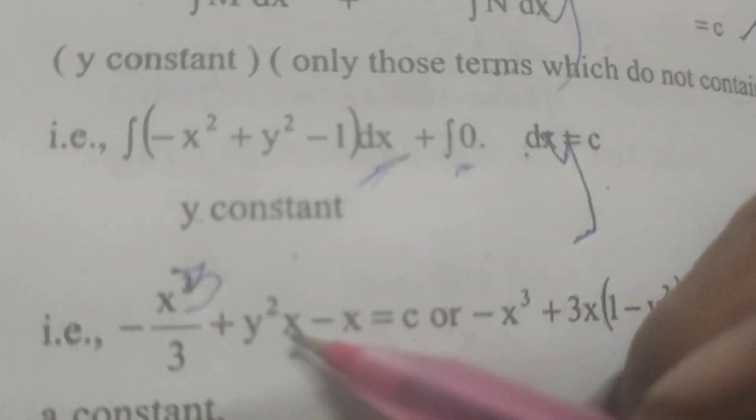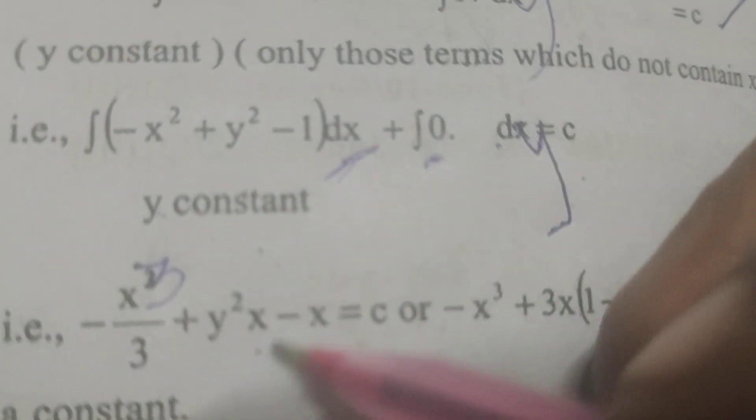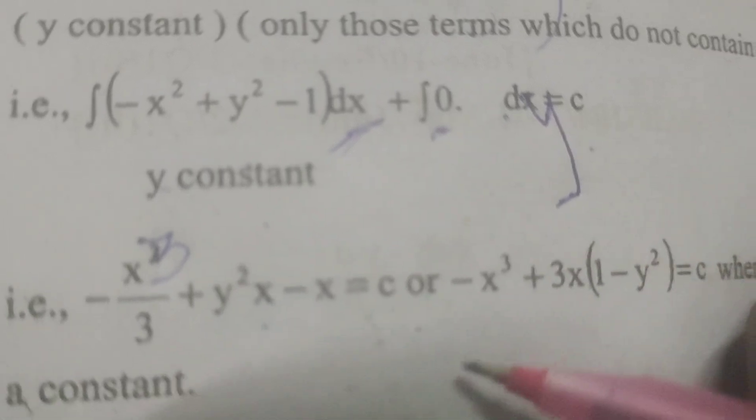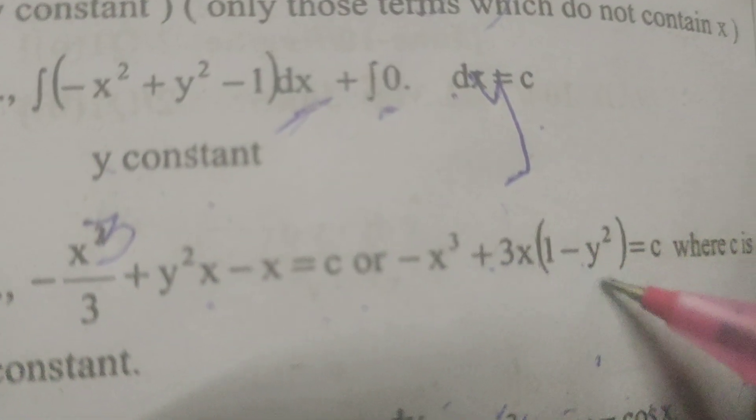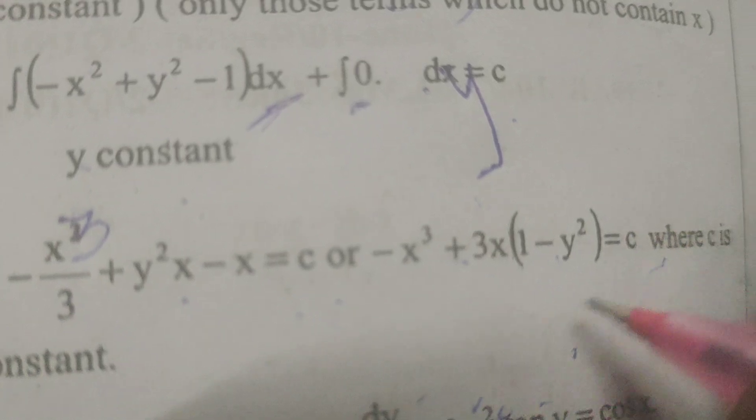Therefore, the answer will be: -x³/3 + y²x - x = c. Then simplify this: -x³ + 3x(1 - y²) = c.